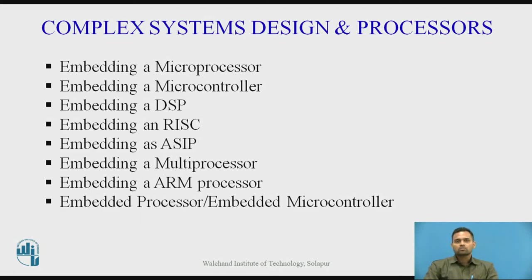For embedding a multiprocessor: sometimes a single processor cannot complete a particular task within a deadline. In that case, multiple processors must be used simultaneously in synchronization. For example, in image or video processing, a single DSP may not finish a task within a deadline, so 3 to 4 DSPs act in synchronization to complete the task. ARM processors are higher versions used for large-scale or higher versions of embedded systems.